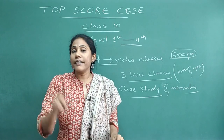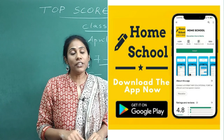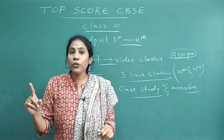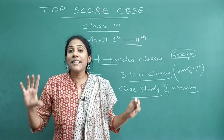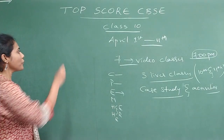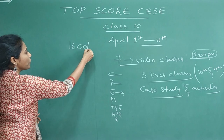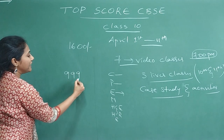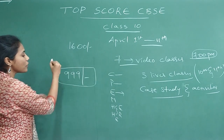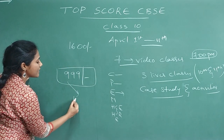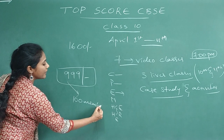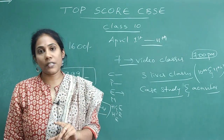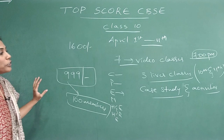To enroll, you must download the Homeschool application — the download link is in the description. Enroll fast because this is a limited offer: the actual price is 1600 rupees, but on offer it's only 999 rupees. This offer price is only for the first 100 members, so hurry up and enroll as early as possible.